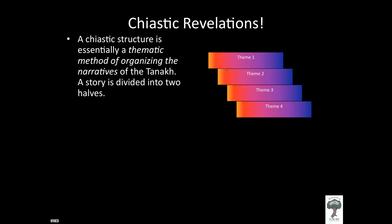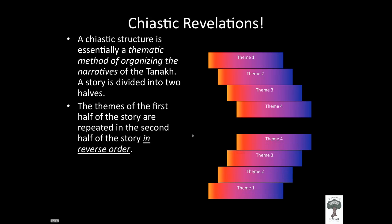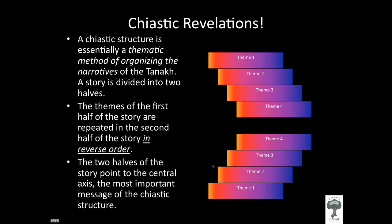Those four themes may be in the first half of the story. And then in the second half of the story, you will see the same themes from the first half, but they will be in reverse order. So whereas theme one was first in the first half, theme one will be last in the second half of the story — it makes a little arrow shape.